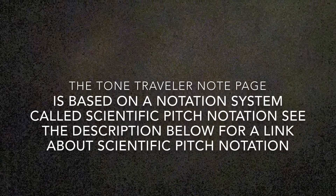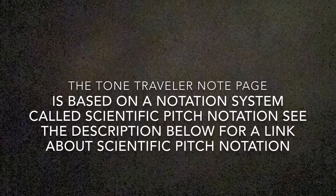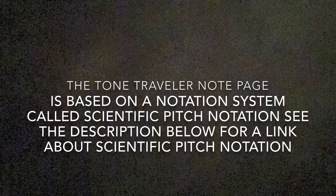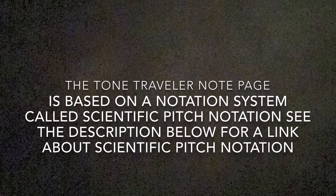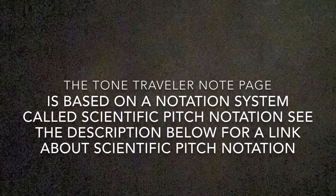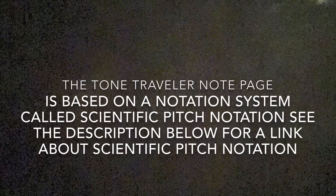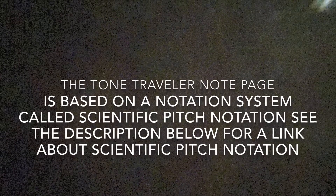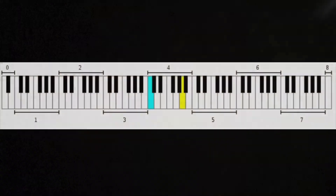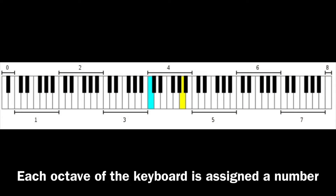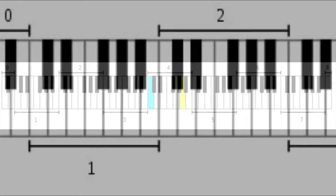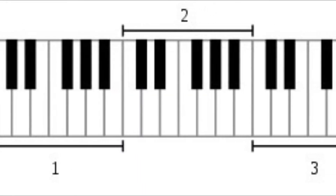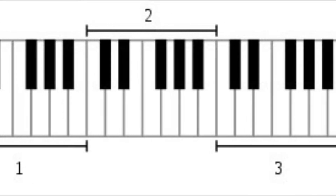Before we get too far into the video, I want to explain that the Tone Traveler note page is based on a system called scientific pitch notation. There'll be more info on that in the description below, but I'll go over a little bit of the basics. Here's a quick diagram of a piano with numbers above and below the keys — those numbers represent the octaves of scientific pitch notation, and also the numbers next to the note names on the note page of your Tone Traveler.